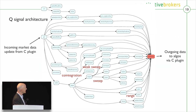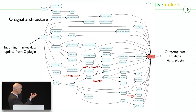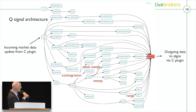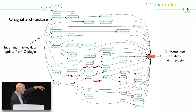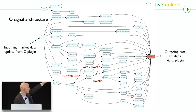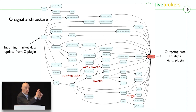The structure of our KDB code: we have a KDB process that receives input data from a C plug-in — that's the market data on the left. The update function goes through a set of functions — we're in the process of refactoring it because it's gotten a little complicated. Various things labeled here are the signals I've talked about: a sweep signal in the middle, a weak sweep, cointegration on the left, and a range signal that tells us where we are relative to previous prices. It's basically a Q infrastructure connected on each end to a C plug-in.